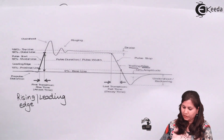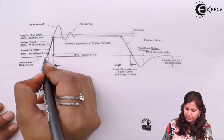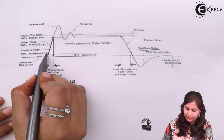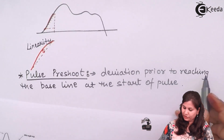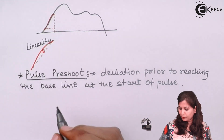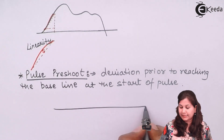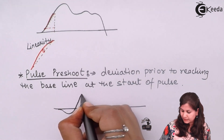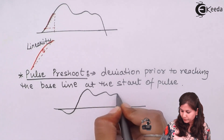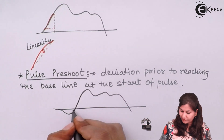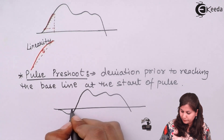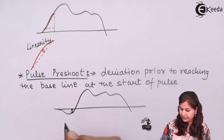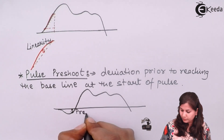When the pulse is starting, if the pulse has any deviation from the baseline before the start of the pulse — that is, it is somewhat deviated from the baseline before the pulse begins — that is called the pre-shoot.